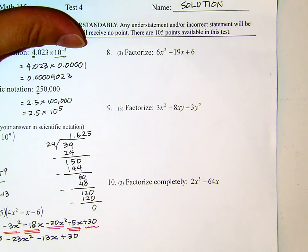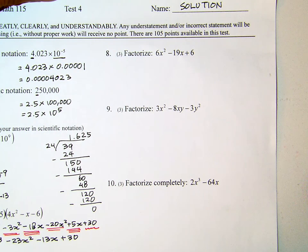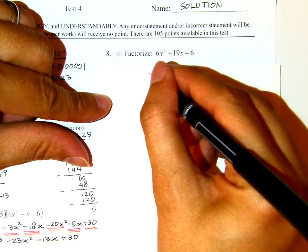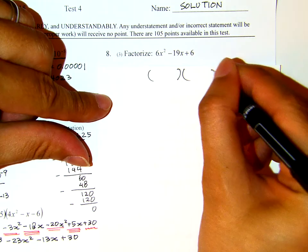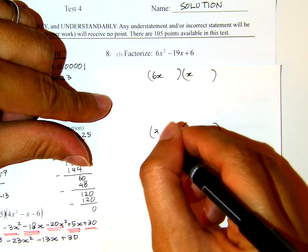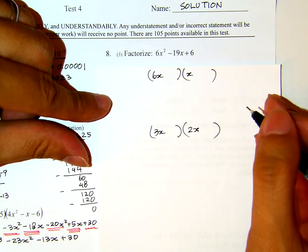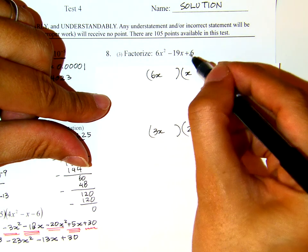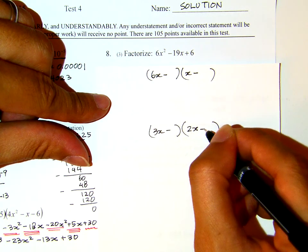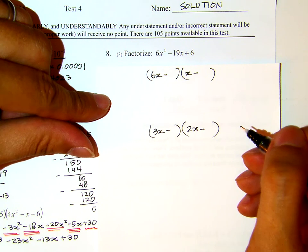Let's see number 8. Factorize 6x squared minus 19x plus 6. Because this seems to be long, let me do it on a scratch paper. For 6x squared, we have a couple possibilities: it's 6x and x, and the other one is 3x and 2x. Because the second sign is plus, we follow the sign of the first sign, which means both of them minus minus.